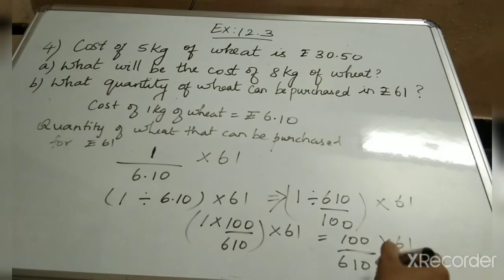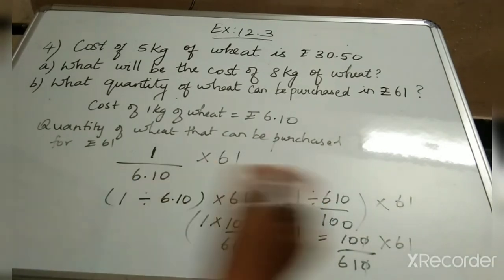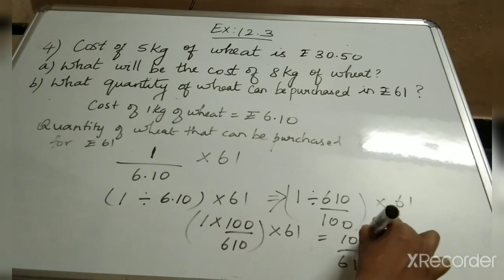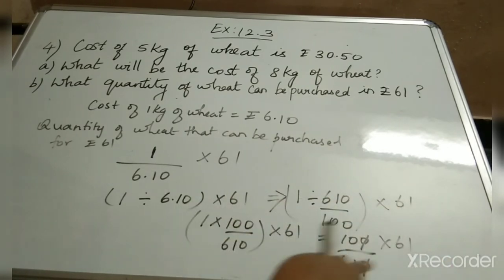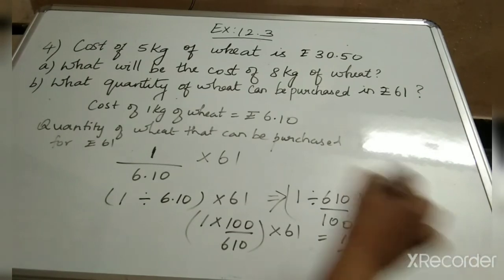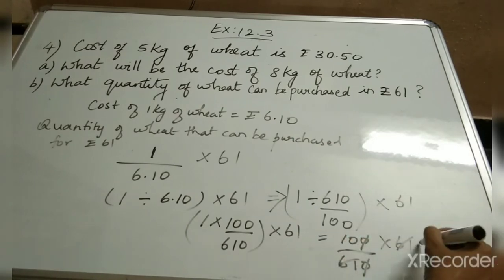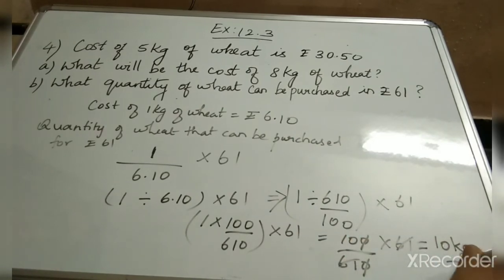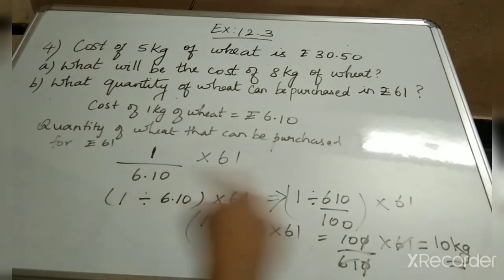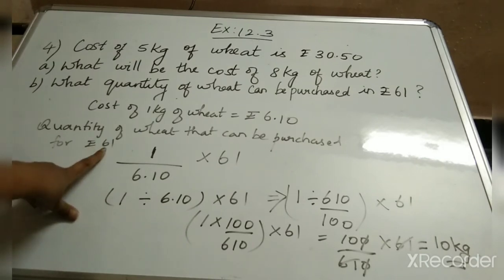How can I simplify? I can cancel one 0 from the numerator and denominator, so 1 zero gets cancelled. Now I am having 61 and 61, and I can cancel these as well. So I am having 10 into 1, which gives 10 kilograms. So 10 kilograms is the quantity of wheat that can be purchased for rupees 61.